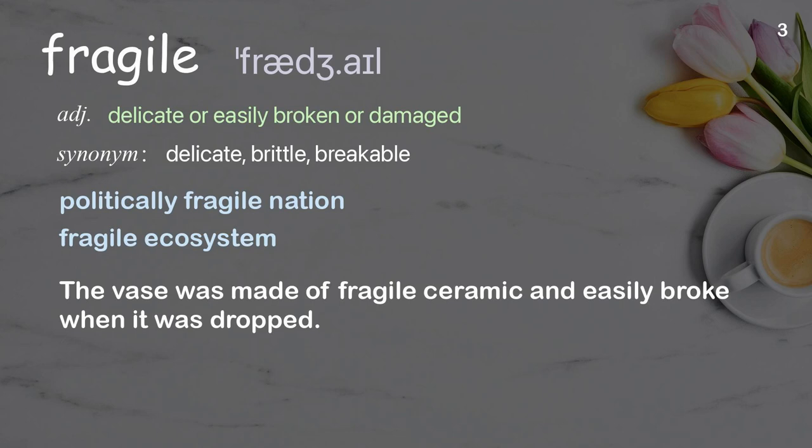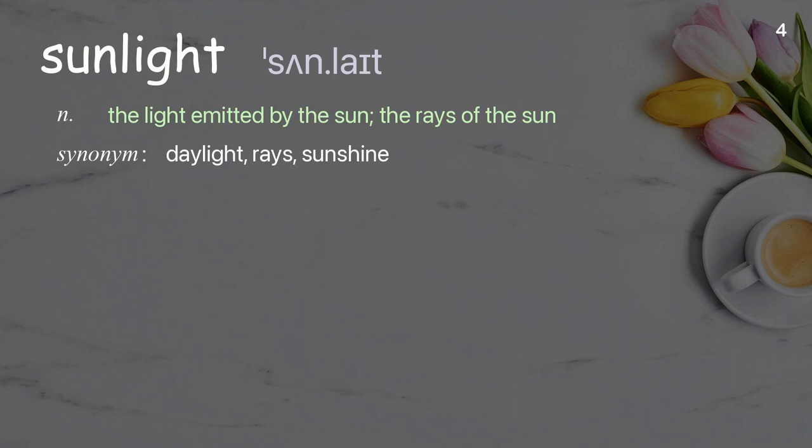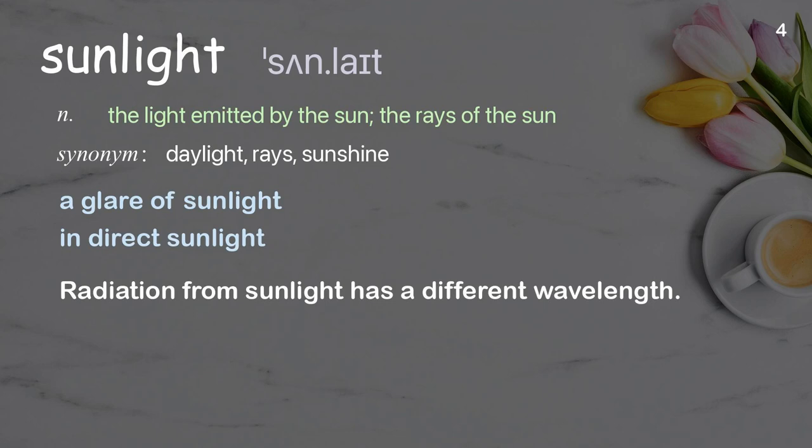Sunlight: the light emitted by the sun, the rays of the sun. Examples: a glare of sunlight, indirect sunlight. Radiation from sunlight has a different wavelength.